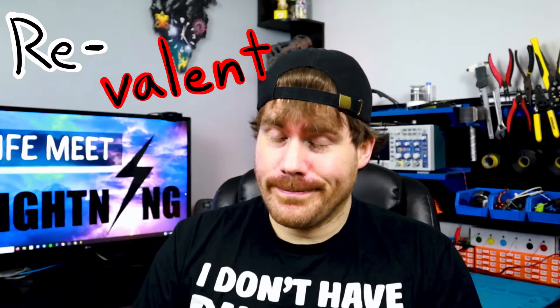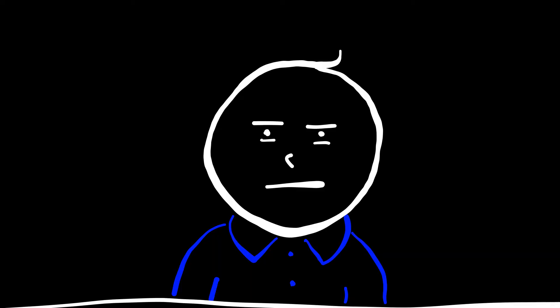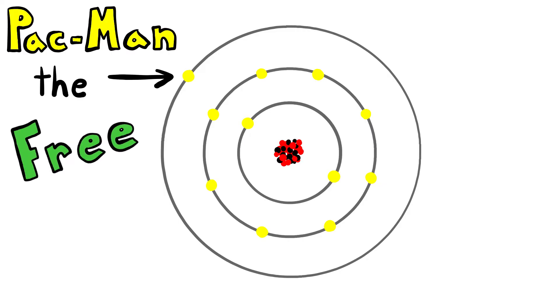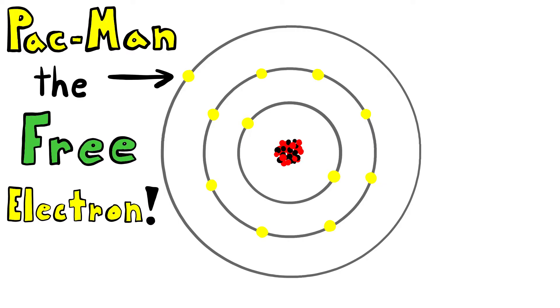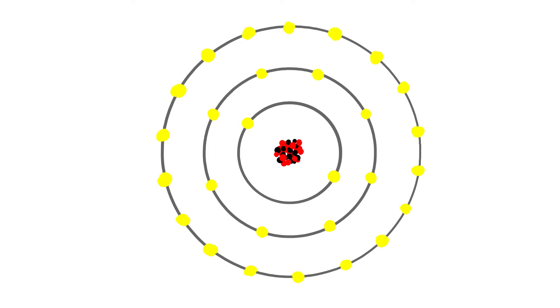We call the outer shell our valence shell, and it contains our valence electrons, because they're relevant. These outer shell valence electrons are party animals — they like to be in a crowd where the party's hopping. So when there aren't many electrons in the valence shell, they have a greater tendency to peace out and leave. However, when the outer shell starts to fill up and become more established, it's harder to get them to leave.